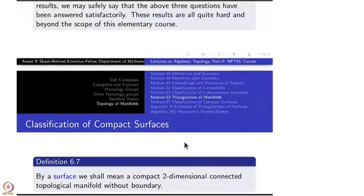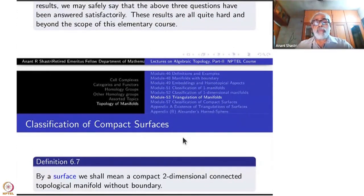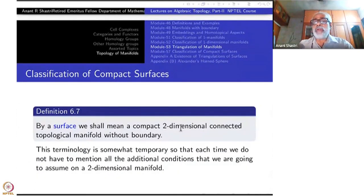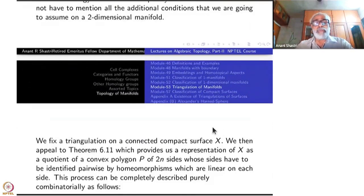So let us make a small beginning today of compact surfaces. It won't be finished now, we'll just lay down some plan of action. First of all, I will use the word surface just to mean compact two-dimensional connected topological manifold without boundary. So I will not keep saying all these, I will just say surface. This is just for temporary notation, temporary terminology, just for another two-three lectures like this. Next, we fix triangulation on a connected compact surface, on a surface.